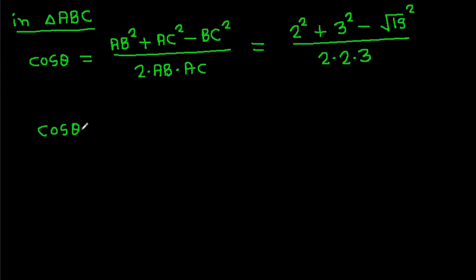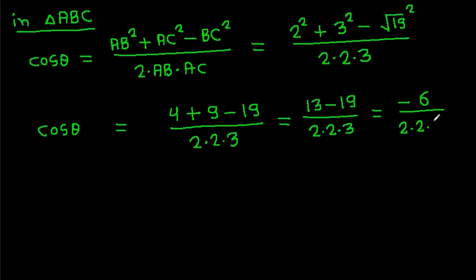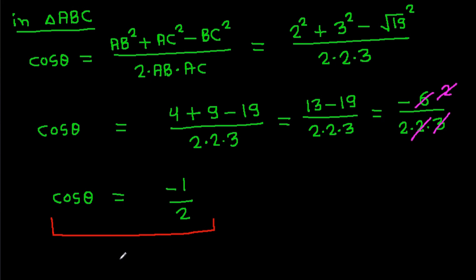So cos theta will be 4 plus 9 minus 19 over 2 times 2 times 3, and it is 13 minus 19 over 12. That gives cos theta equals minus 1 over 2, and that means theta will be 120 degrees.